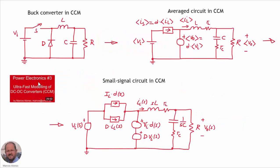In this previous video, Power Electronics number 3, about how to model DC-DC converters in continuous conduction mode, we saw how from the actual buck converter operating in continuous conduction mode we can obtain the average circuit, using current sources and voltage sources that depend on the different parameters of the circuit. Then taking perturbations on this circuit we can obtain the small signal circuit in continuous conduction mode. From this small signal circuit we can obtain all the different transfer functions of the converter, including the output impedance.